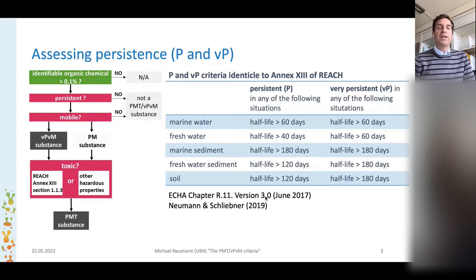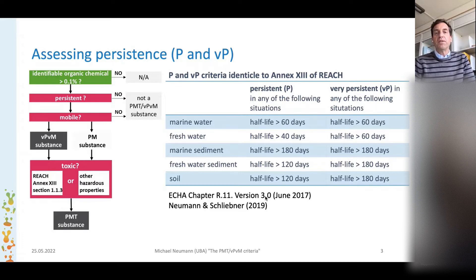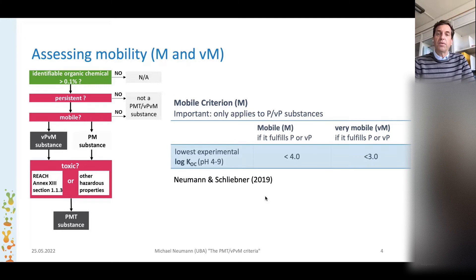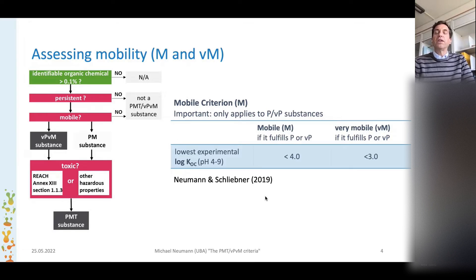Here I'm presenting the assessment scheme that we are proposing for the PMT/vPvM assessment. On this first slide I have the persistent and very persistent criteria, which are actually identical to Annex 13 of REACH. The second assessment criteria is the mobility criteria — the M and vM — and it's very important to notice that this criteria only applies to a substance that has been previously assessed as persistent or very persistent. In 2019 we proposed to use the cutoff value for the log KOC of 4.0 for the mobility criteria and 3.0 for the very mobile criteria.